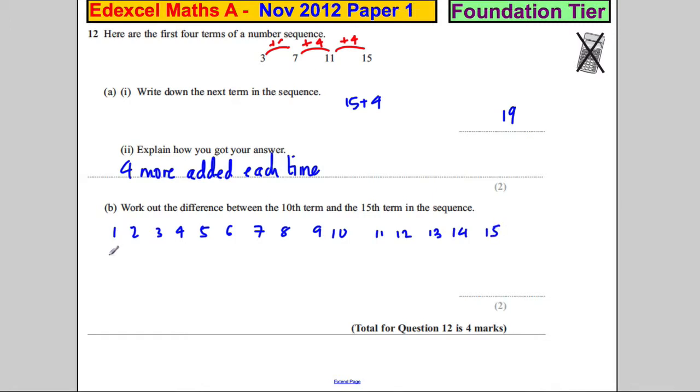The first term is 3, 7, 11, 15, and you add four more each time. So it's 19, 23, 27, 31, 35, 39, 43, 47, 51, 55, and 59.